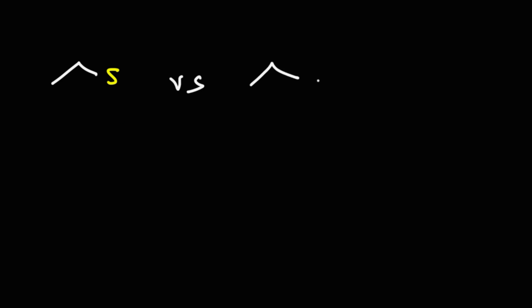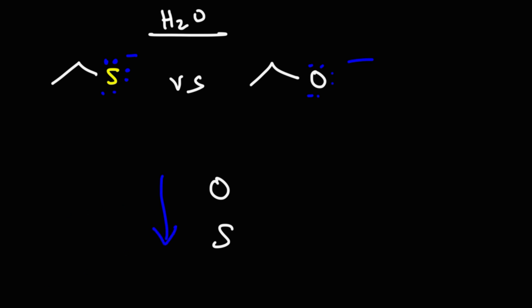Now what if we compare the thiolate ion with an alkoxide ion — which one is the better nucleophile? We're comparing oxygen and sulfur, and we need to define the solvent when dealing with atoms of different size. In water, which is a protic solvent, nucleophilic strength increases as you go down the periodic table. So sulfur with a negative charge is going to be more nucleophilic than oxygen with a negative charge.